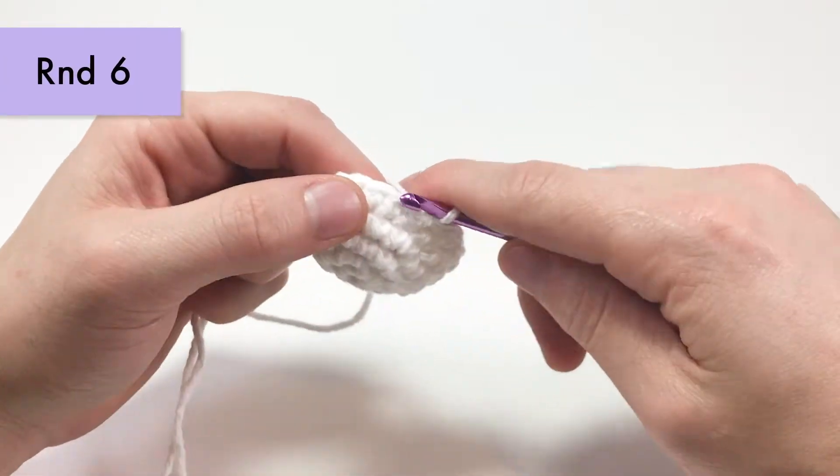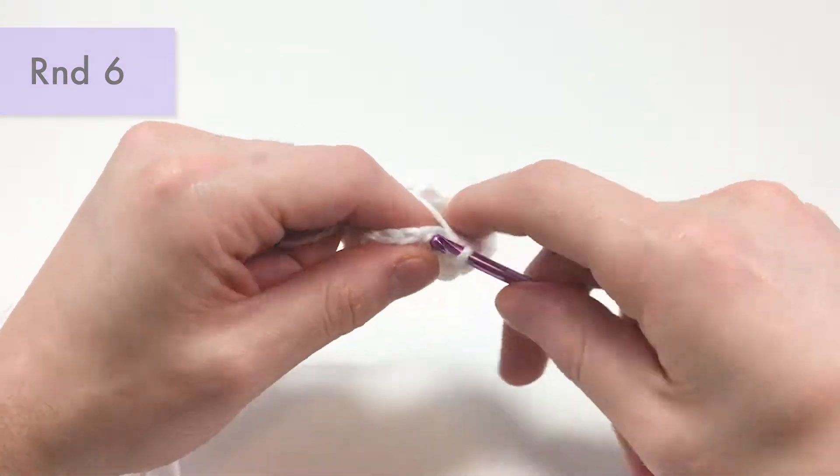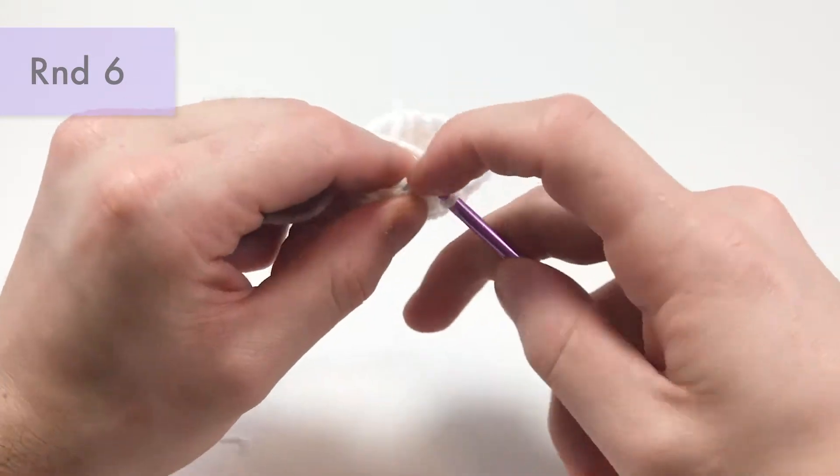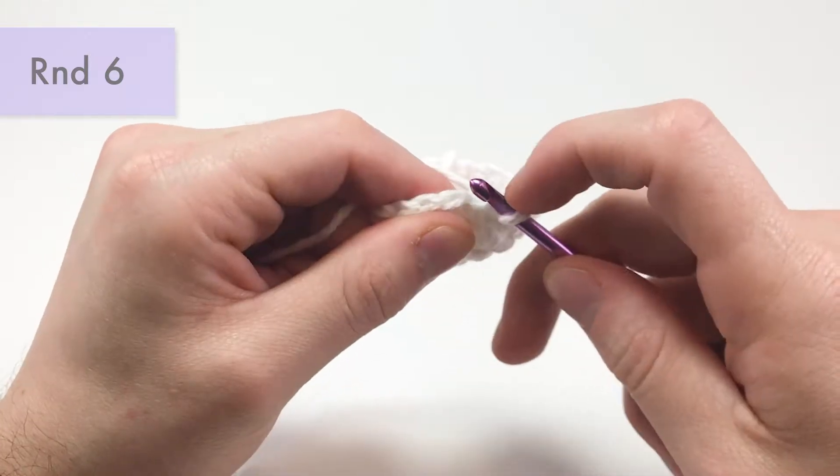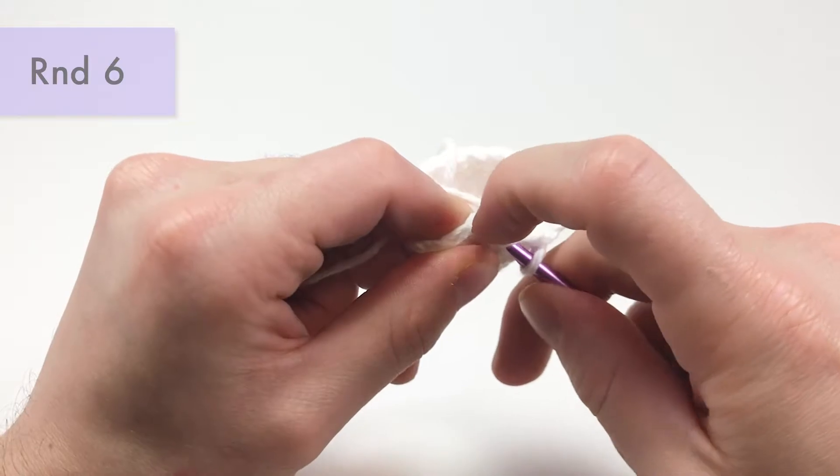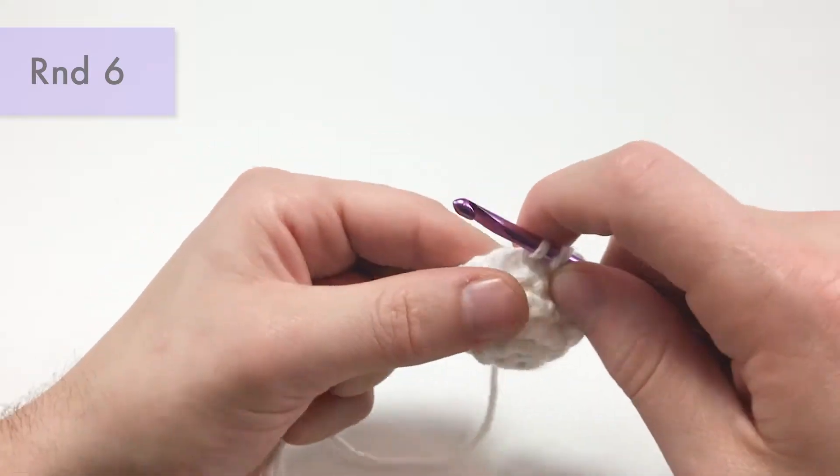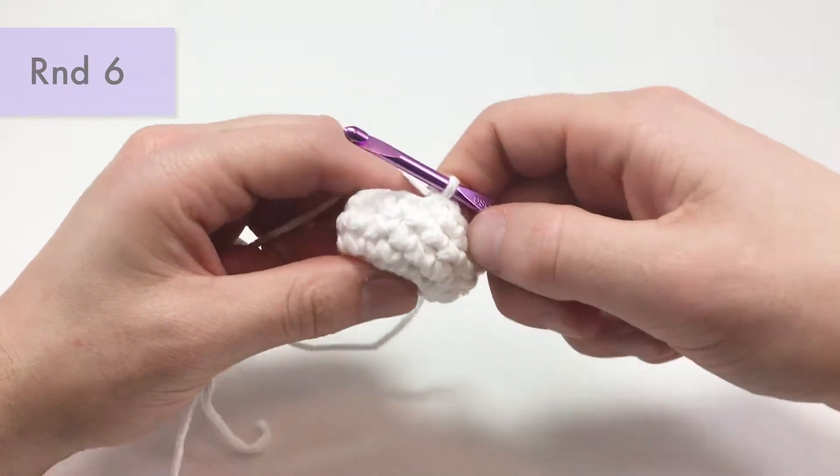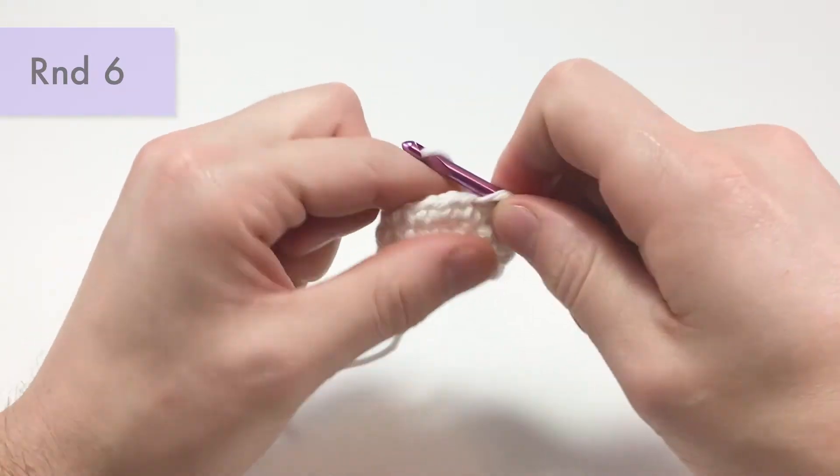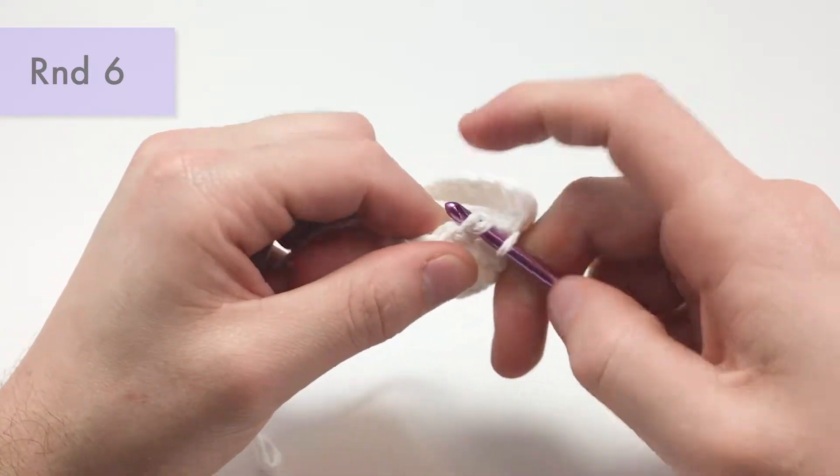For round six, we'll be going down from 18 stitches to back down to 12 stitches. So to do that, we'll single crochet one in the first, and then we'll invisible decrease in the next. And if you didn't know what an invisible decrease is, you get your crochet hook into the front loops of the next two stitches like that, and then you do a single crochet into those two front stitches. And that's called an invisible decrease. So for round six, we'll be single crocheting one in the first, invisible decrease in the next, and then repeating that pattern six times total. This is going to bring you down from 18 stitches to 12 stitches around.